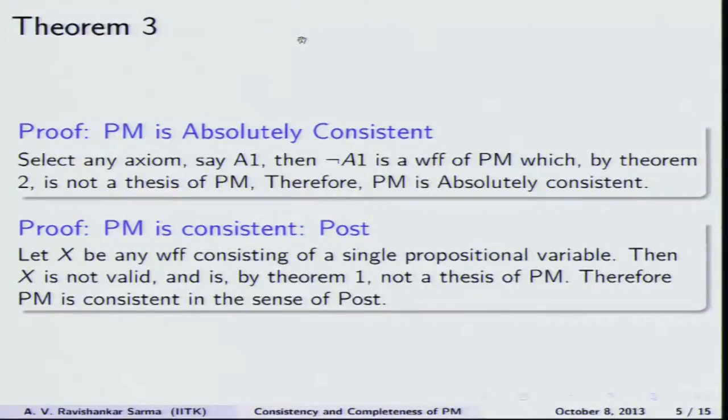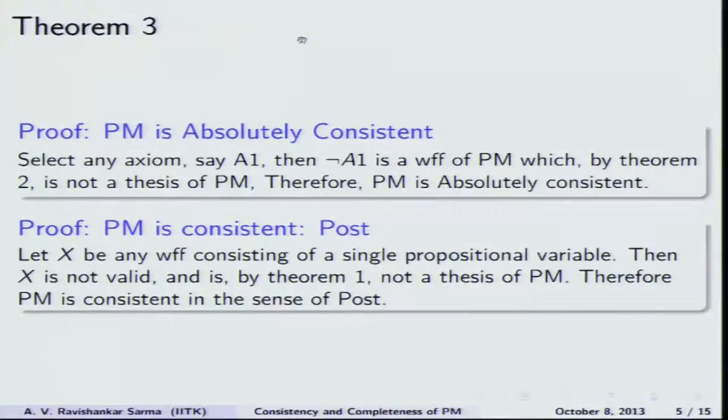In summary, we discussed three kinds of consistency. Most commonly we use consistency with respect to negation: any axiomatic system should not derive both X and ¬X. If it does, the system is trivial. Consistency ensures no contradictions in your system — once you have contradictions, you can prove anything, including X, ¬X, and any strange proposition.